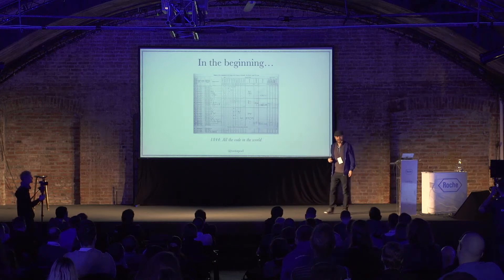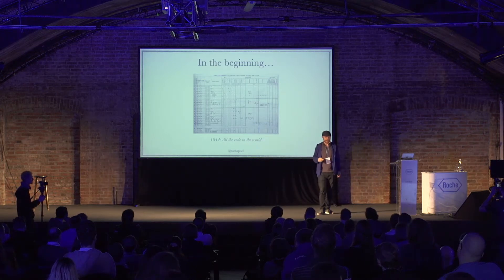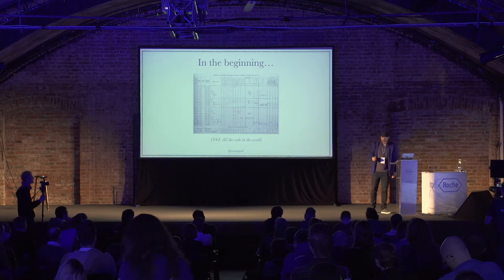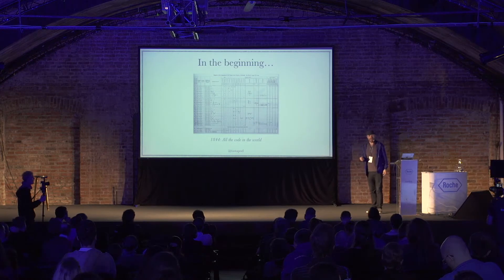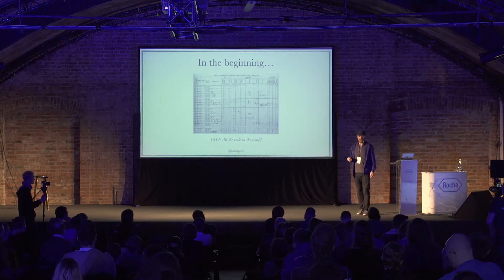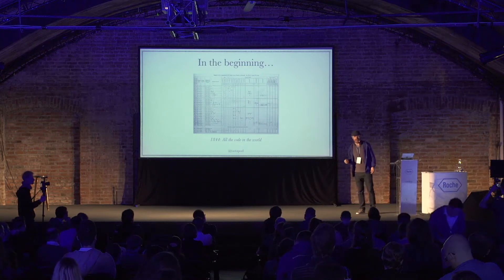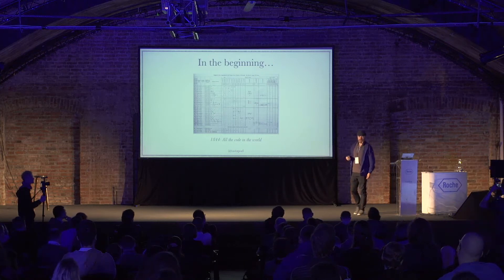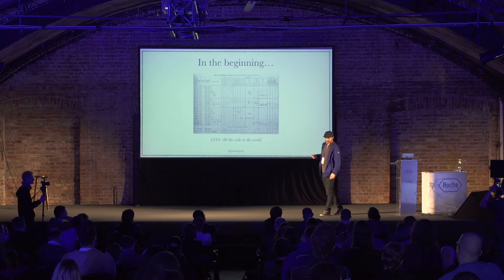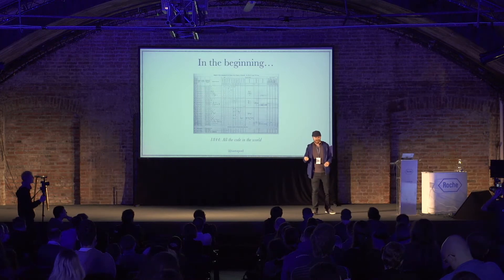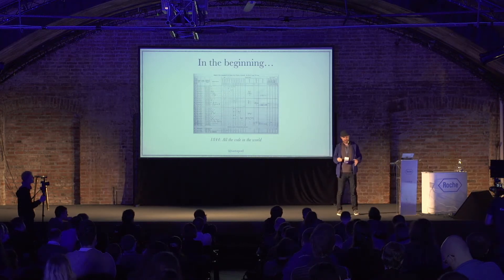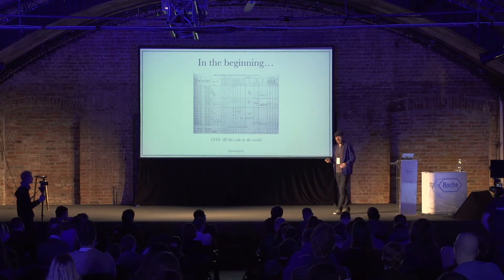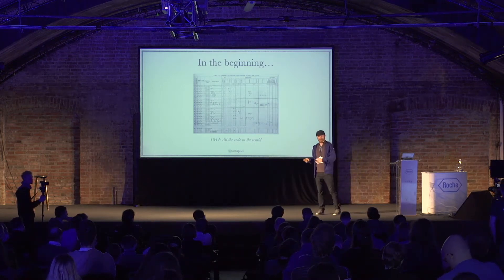Does anyone know what this is? Anyone recognise this? So this was considered the first ever algorithm for a computer that was written down. It was written down by a lady called Ada, Countess of Lovelace, who was the daughter of Lord Byron, who was an English poet and druggie. His wife was convinced that his daughter Ada wasn't going to grow up to be a druggie and a poet, so she taught her science and mathematics.